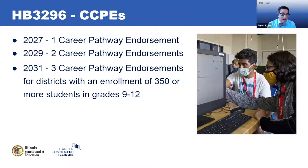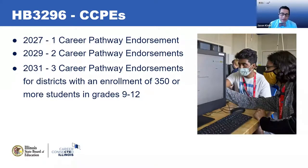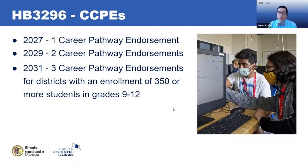With the career pathway endorsements, there is one endorsement that districts must offer to their graduating class of 2027. That's really important to note — 2027 sounds like a long way away, but it is only five years from now. For the students who are graduating as 12th graders at that point, there's not a lot of time to get moving on this. If your district has not begun moving forward, now is the time to definitely start taking steps.